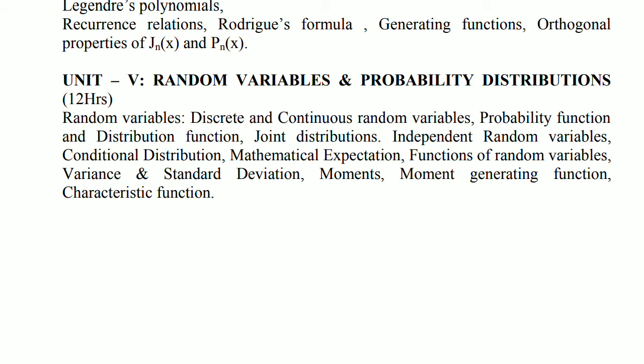Unit number 5, Random Variables and Probability Distributions. There are two types of questions: on discrete and continuous random variables. And there are two further types: single random variable questions and two random variable questions involving joint distributions. Again, we have mean, variance, standard deviation, and characteristic functions. It is not fixed which question comes in either or or, but generally discrete and continuous questions come in the either part, and mean, variance, moment generating functions, and characteristic functions come in the or part.